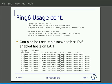A neat trick for discovering other IPv6-enabled hosts on your LAN is ping6 -I eth0, specifying your LAN interface, followed by FF02::1.